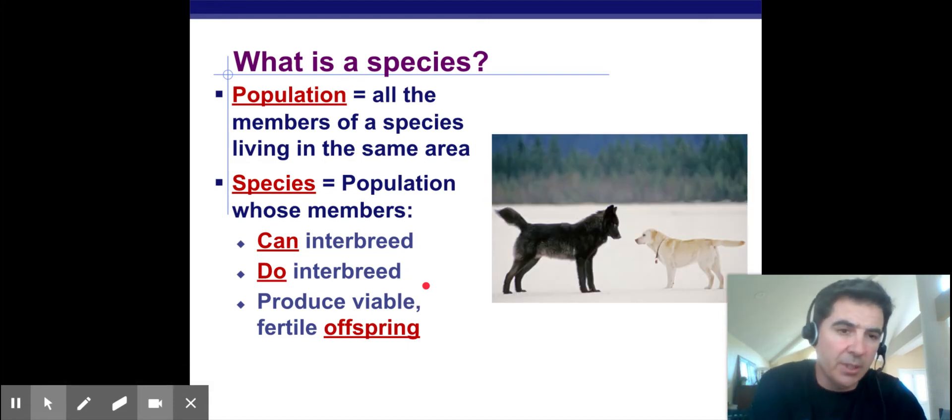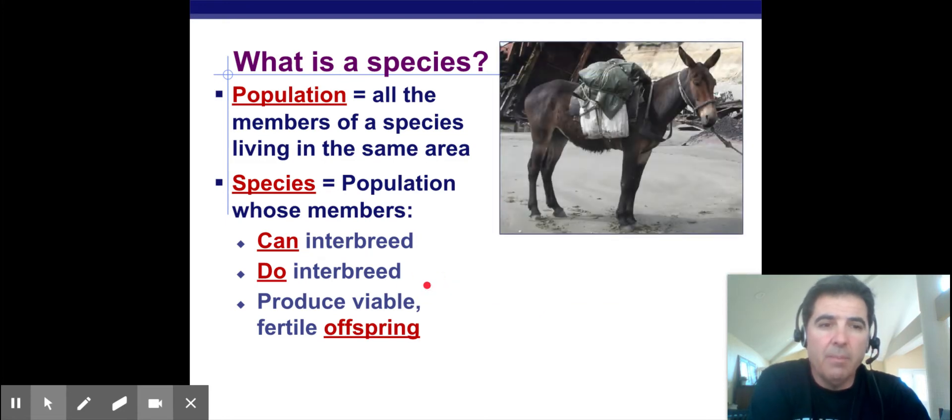These two dogs, although they look dissimilar, they are the same species, Canis familiaris, and they can interbreed. They do interbreed if you let them and they will produce viable fertile offspring.